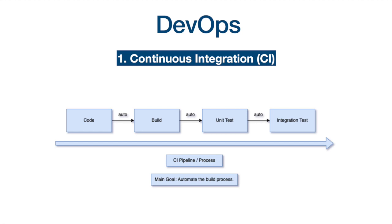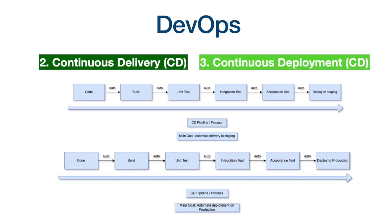Continuous integration is the process of automating the build task — as soon as new features are checked in or there is a change or fix, a build is created automatically. Automated testing is an integral part of this process, including automating unit and integration tests. If we extend the pipeline and include acceptance tests and deployment on the staging and production environment, then this pipeline is called continuous delivery and continuous deployment.